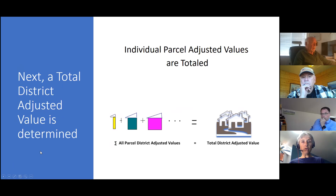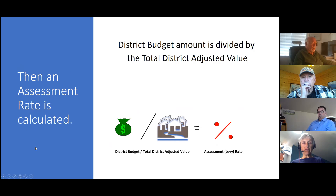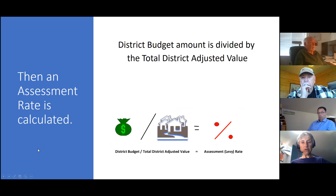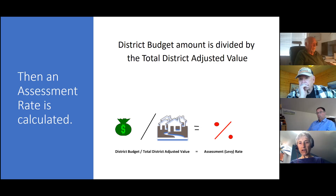Then we total all the adjusted values of the properties in the district to come up with a total district adjusted value. An assessment rate for the year is calculated based on the approved district budget for that upcoming year — the amount of assessments approved by the board — and we divide that by the total district adjusted value to come up with a levy rate. This is done individually for flood control for each parcel and then separately for water quality for each parcel.